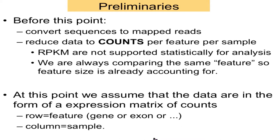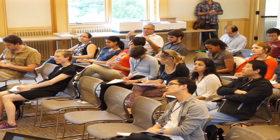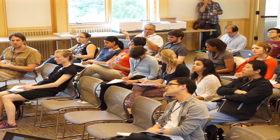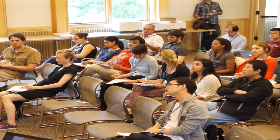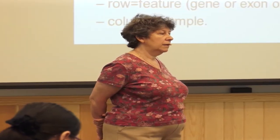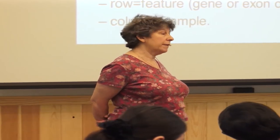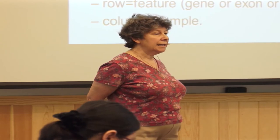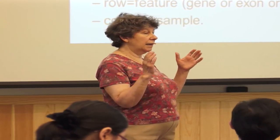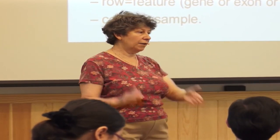As before, we'll have an expression matrix where the rows are the features and the columns are the samples. One question that comes up: if you're not using RPKM, how do you account for a situation where you have a million reads in one sample and fewer in another? You do another type of normalization — basically what's called an offset. We're going to talk about that when I get to the stats part.